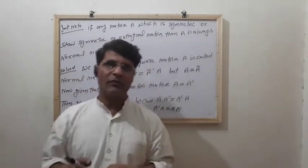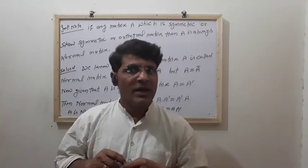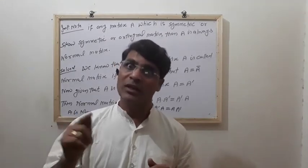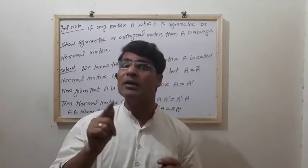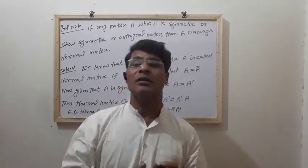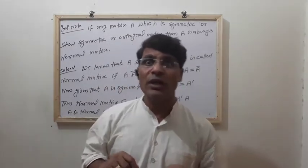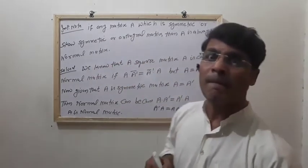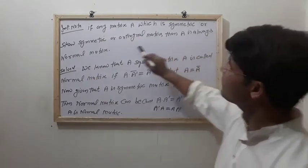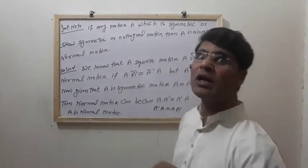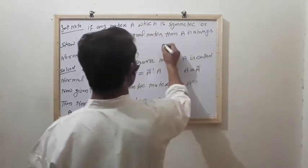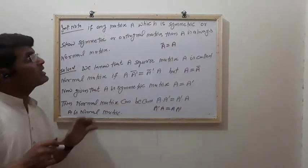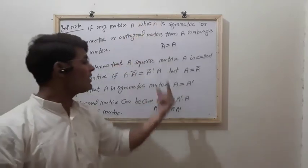Similarly, you can prove that skew-symmetric and orthogonal matrices are also normal. Note that symmetric, skew-symmetric, and orthogonal matrices are always real matrices, but the normal matrix in general is a complex matrix. Since A-bar equals A for these real cases, skew-symmetric and orthogonal matrices are always normal matrices.